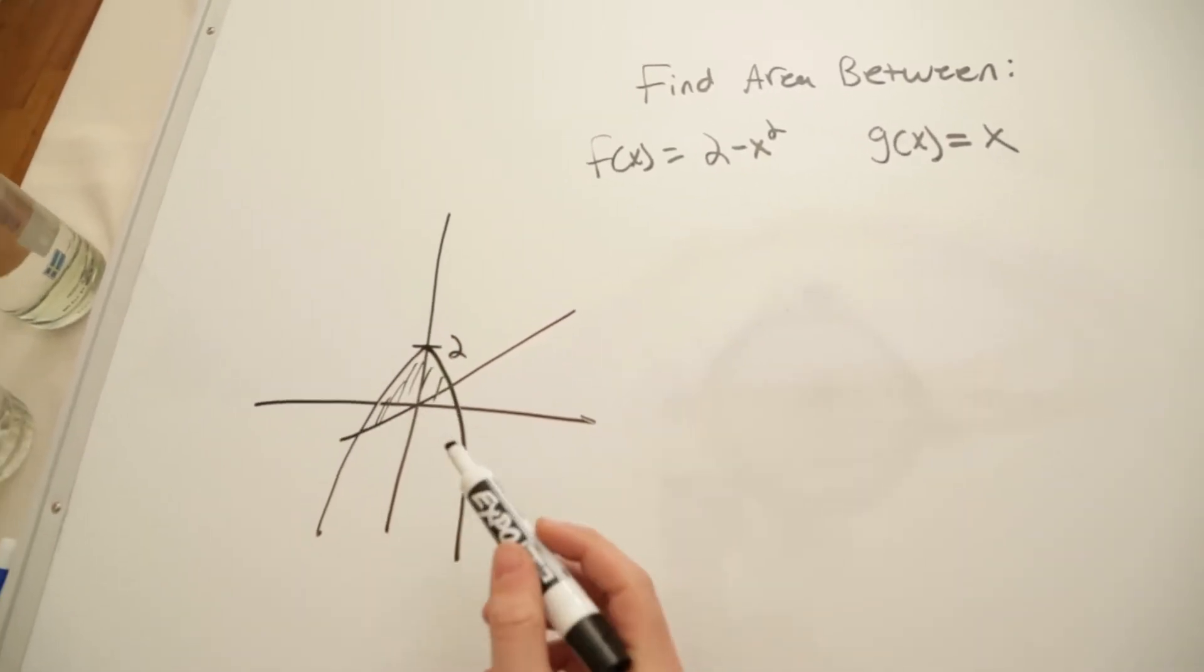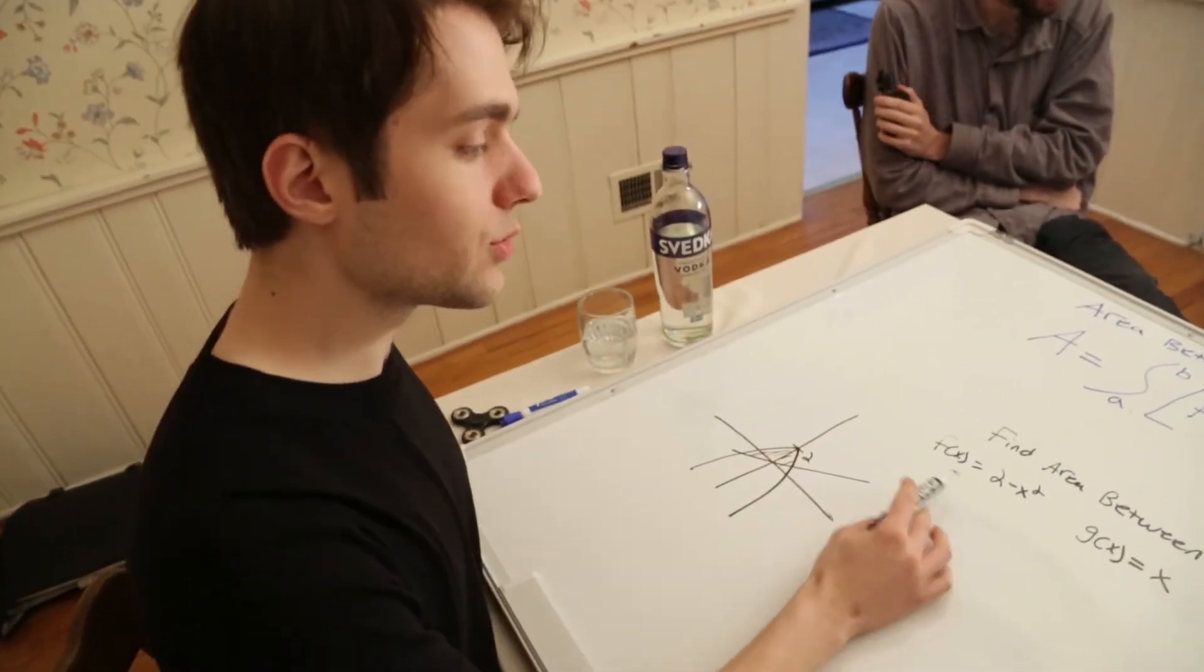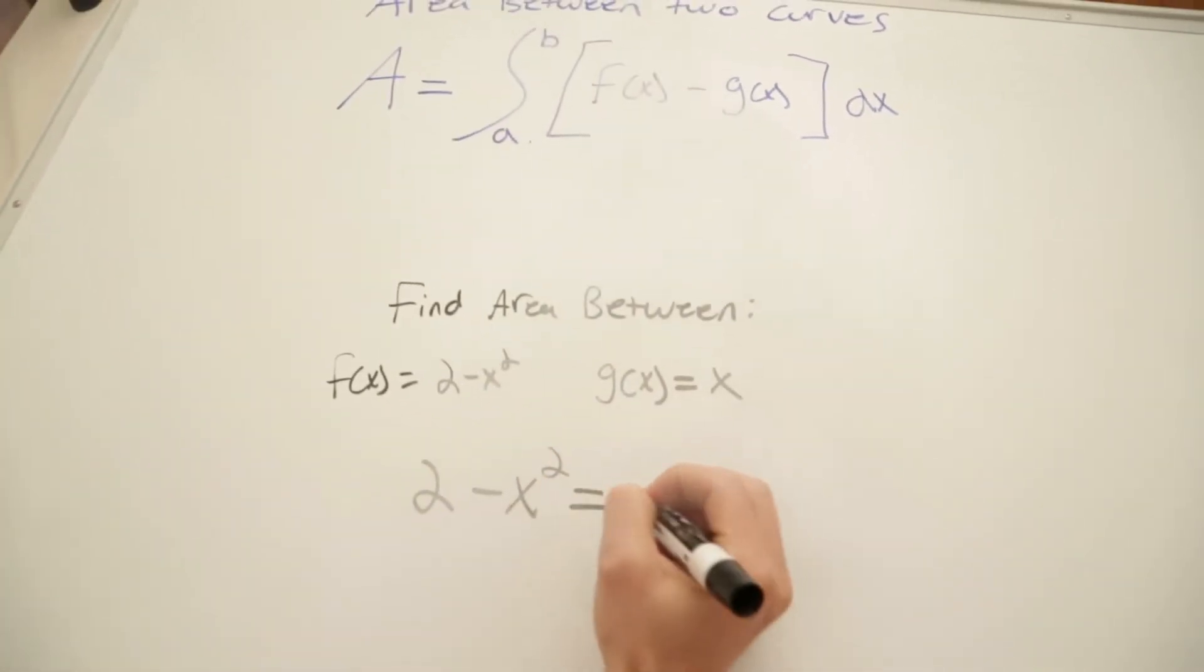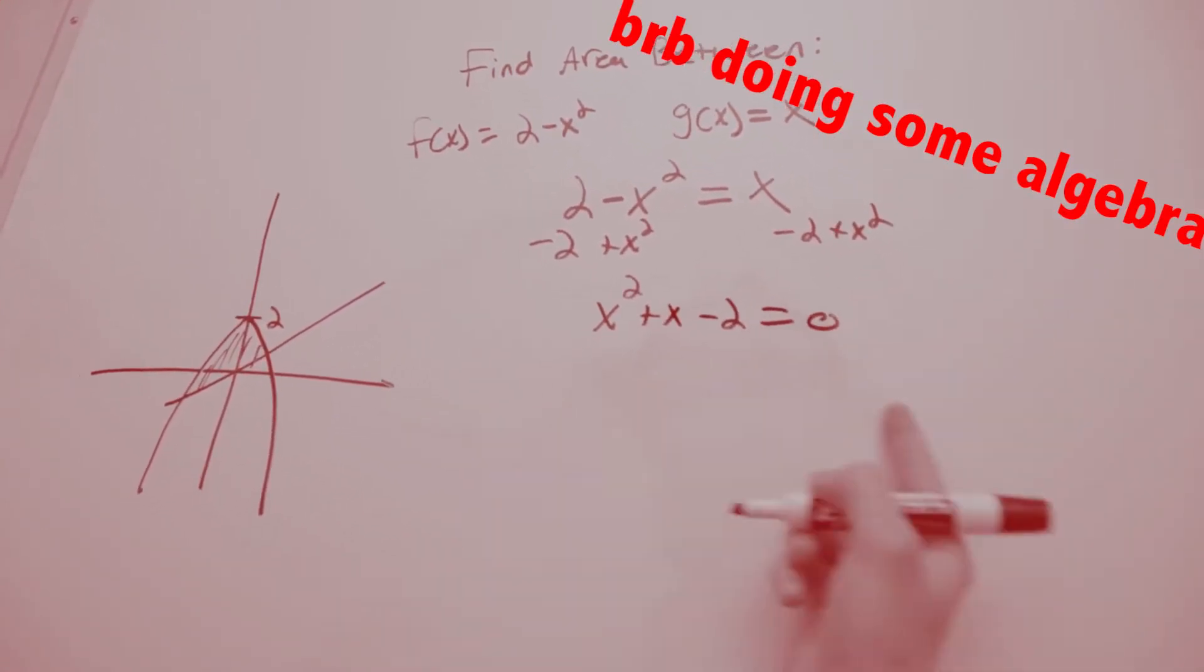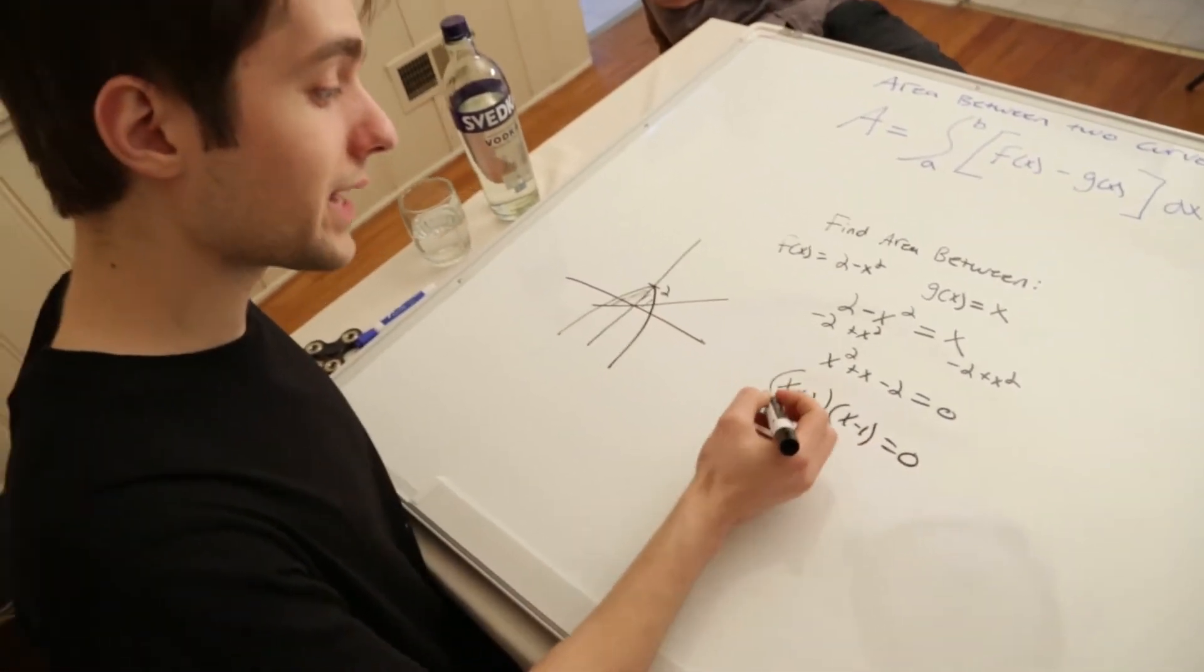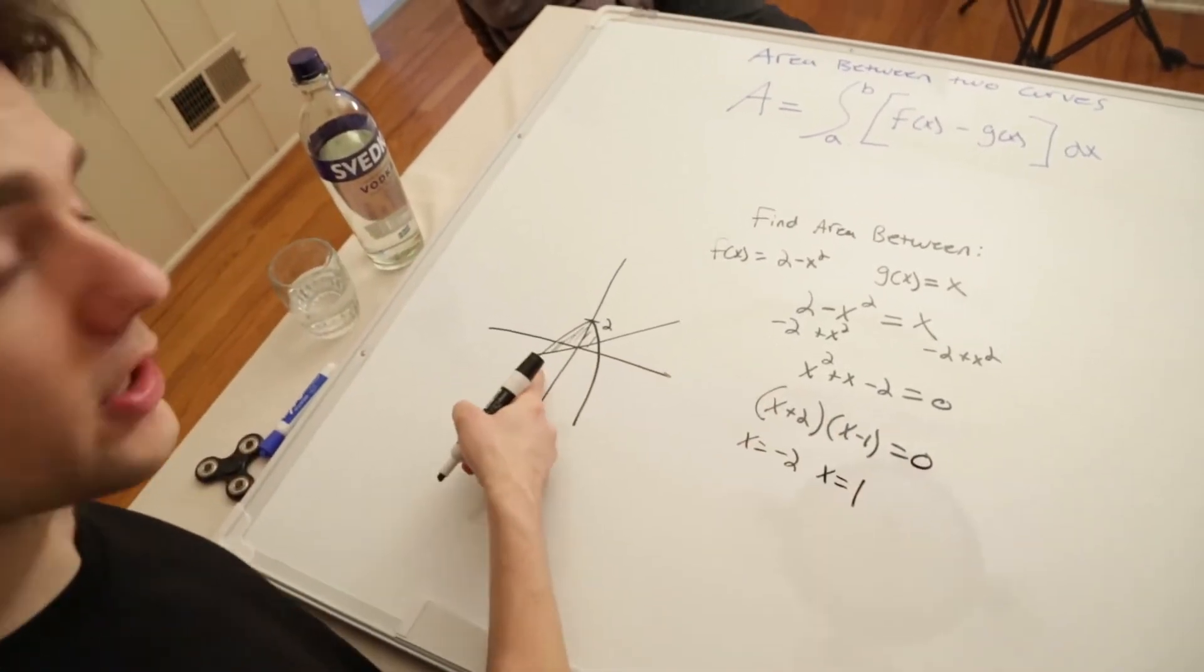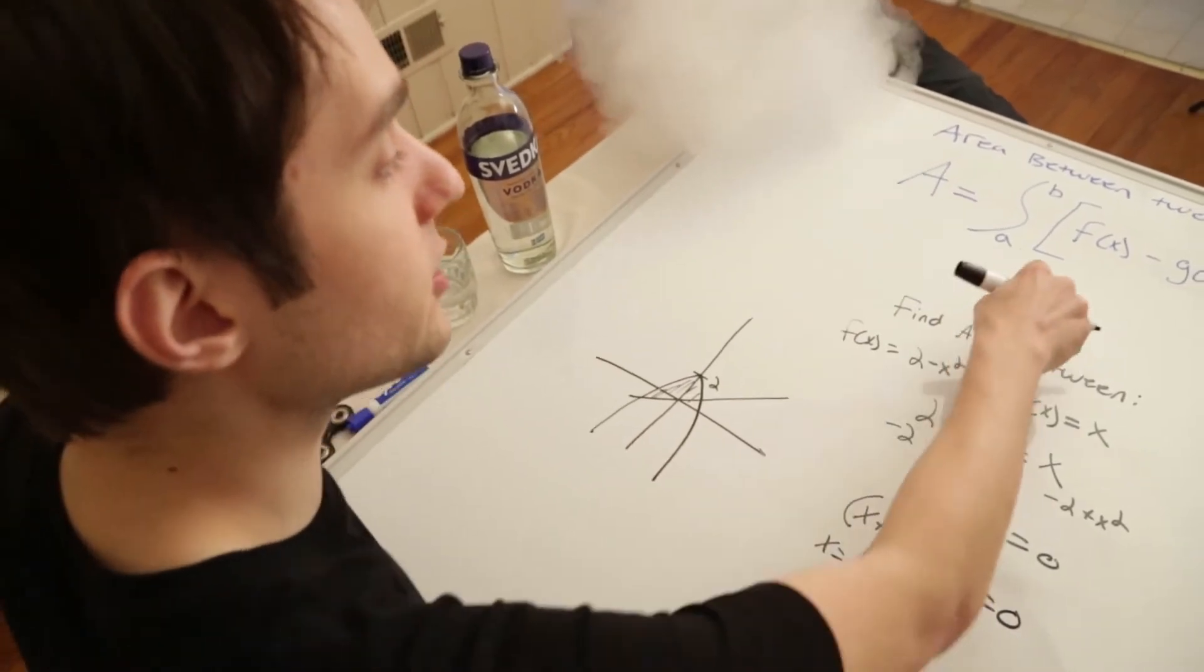This is the area between the curves. But we're not told where they intersect. So if you want to find where they intersect, you set the graphs equal to each other. If we set two minus x squared equal to x. So as we can see, when x is equal to negative two, or when x is equal to one, these are going to intersect. So now we have the interval that we need to do this integration.